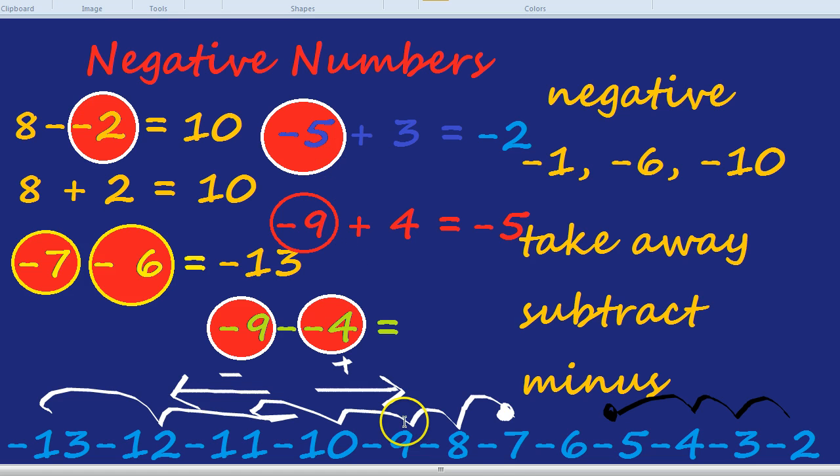To illustrate that on the number line, here's minus 9 down here. Now, adding 4 moves us up the number line, so it's 1, 2, 3, 4 to negative 5.